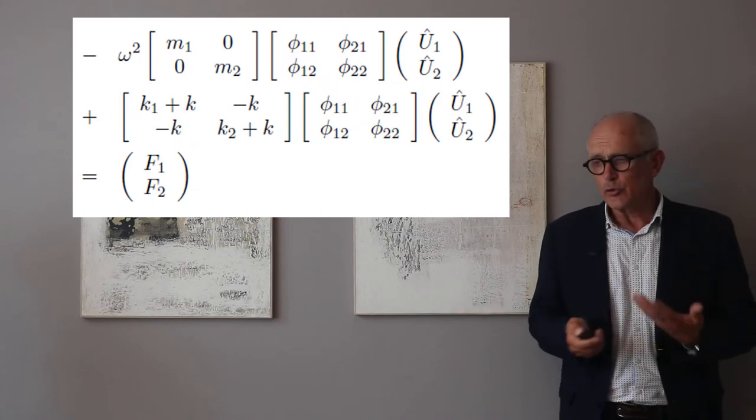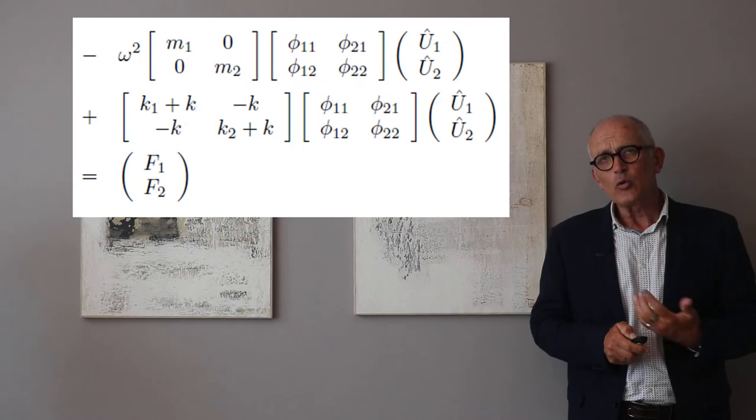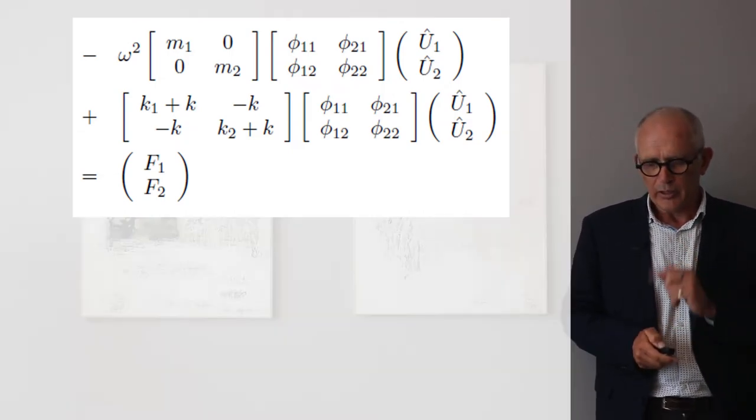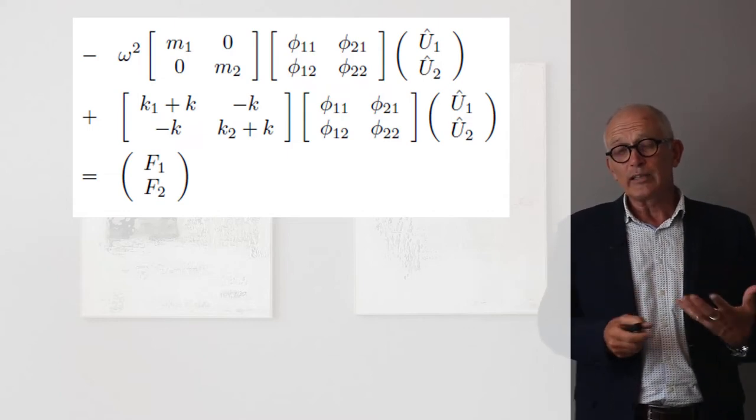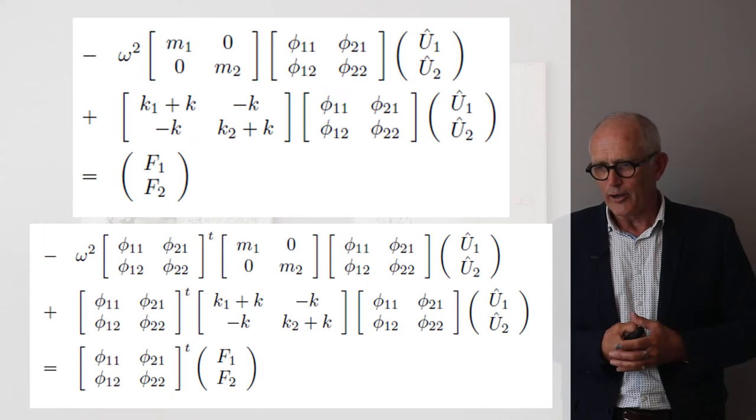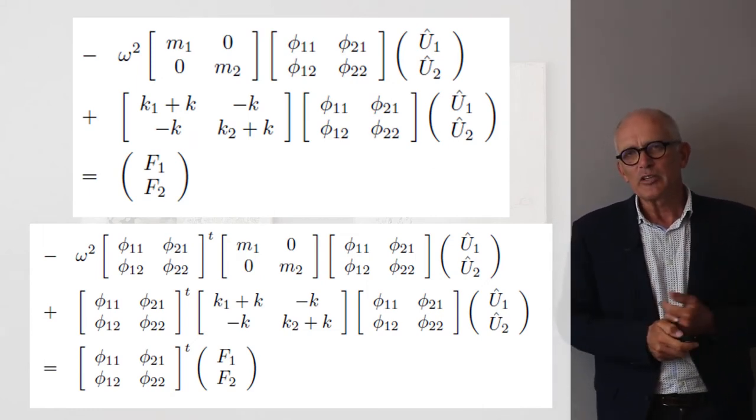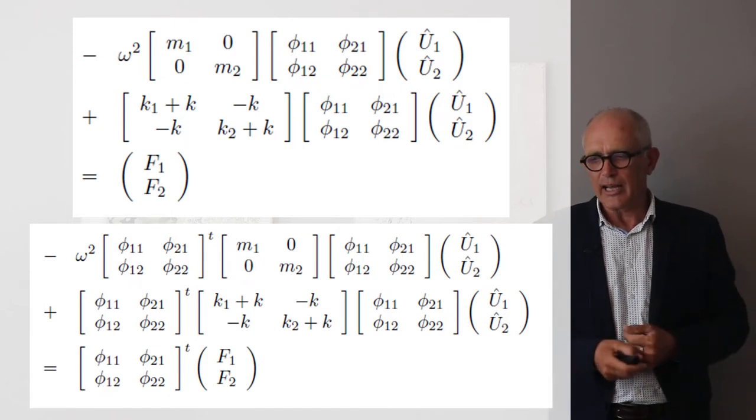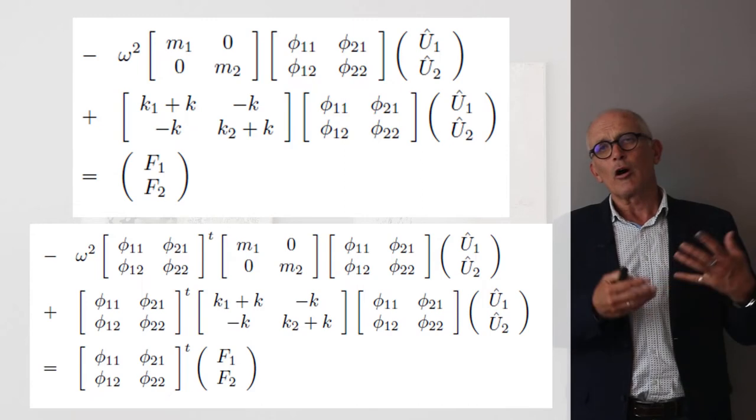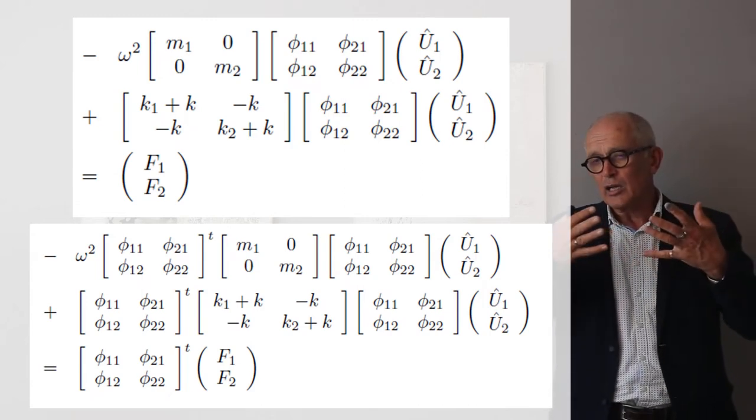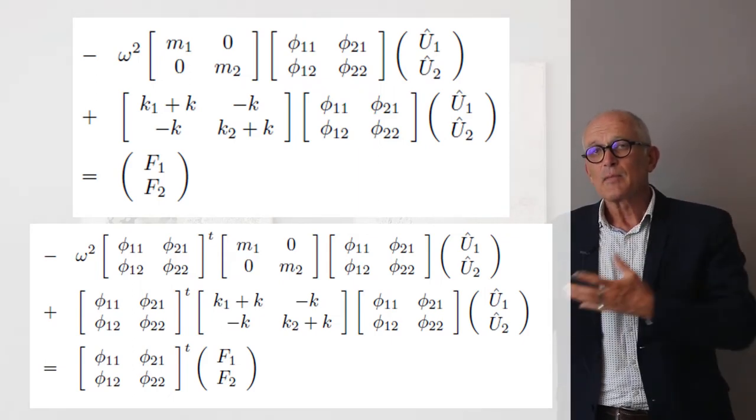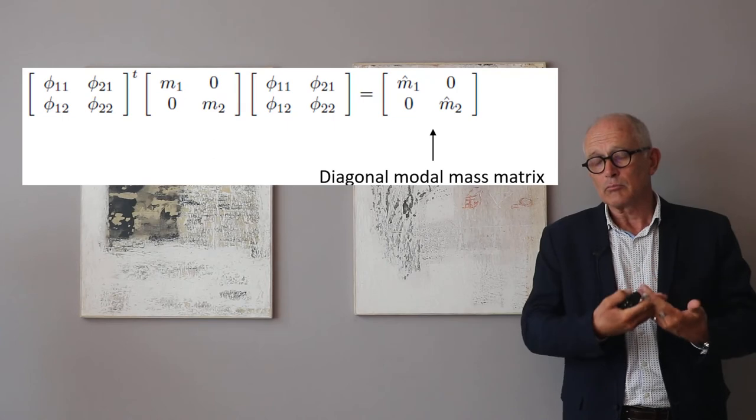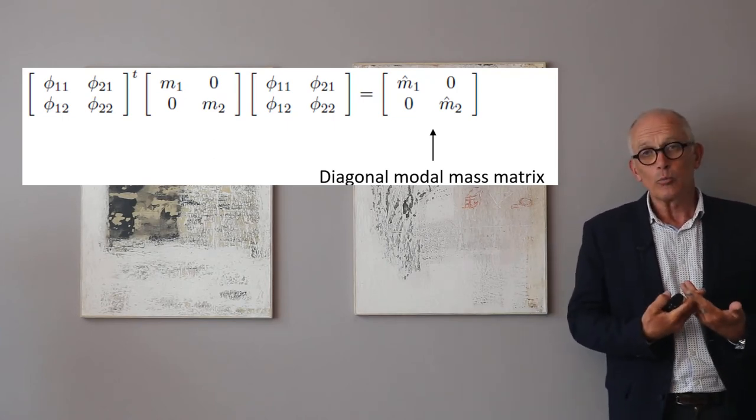Now if we put that into the system of equations we obtain the following which is not very interesting, it only becomes interesting if we now pre-multiply that equation by the transpose of the modal matrix. Follow me you'll see why we do that. If we do that, this is what we get. And it doesn't seem more interesting, no more simple, but it only becomes interesting if you know, and this will be demonstrated elsewhere, so just take it as a property and trust me on that, that this triple product of the transpose of the modal matrix times the mass matrix times the modal matrix gives me a diagonal matrix whose coefficients on the diagonal are called hat m1 and hat m2. These are called the modal masses.